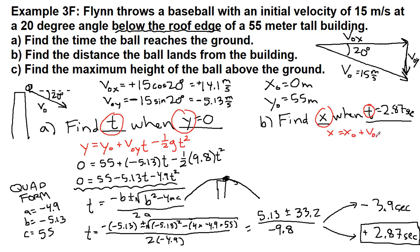We're well acquainted with this equation now, and we plug in 0 plus 14.1 times 2.87, and we get as a result 40.4 meters.